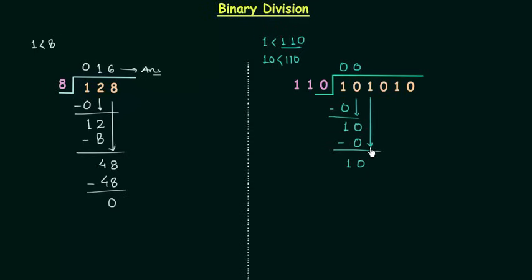This 1 will come down and we have 101. 101 is again smaller than 110. 101 is 5, 110 is 6. So 6 is greater than 5 and again we have quotient equal to 0.